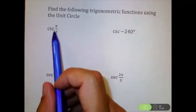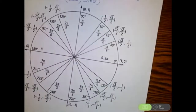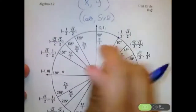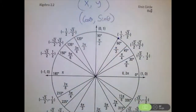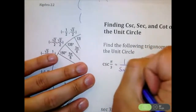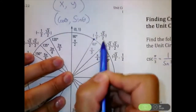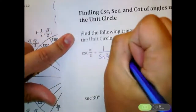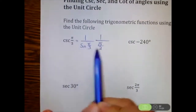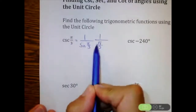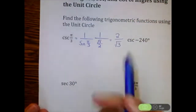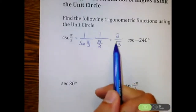Starting with cosecant of π/3. We reference our unit circle — if I look for π/3, we're right up here. Remember, cosine is the x-coordinate and sine is the y-coordinate. So cosecant of π/3 equals one divided by sine of π/3. Sine of π/3 is √3/2, so we have one divided by √3/2. Taking the reciprocal — flipping it — we get two over the square root of three.